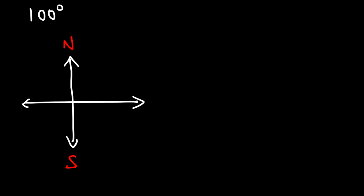So this is north, this is south, east, and west. Now, because no direction is stated, we need to rotate in a clockwise direction, starting with the north line. So this is 90, and this is going to be 100. And that's how we can represent a bearing of 100.